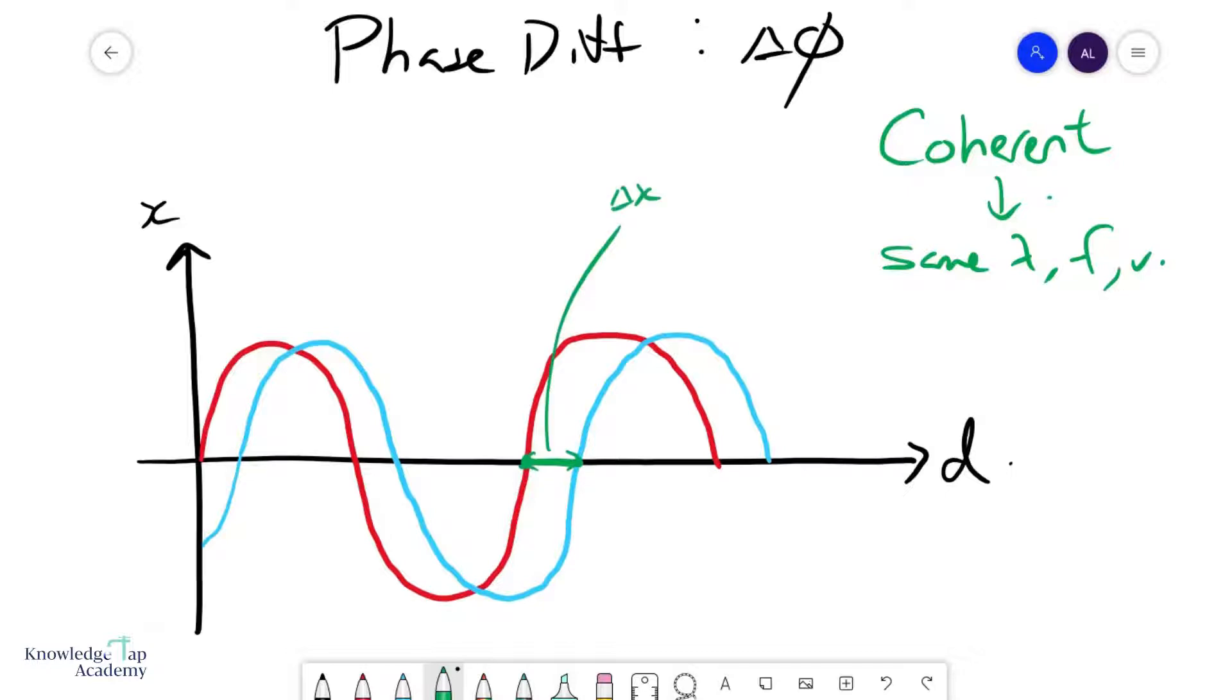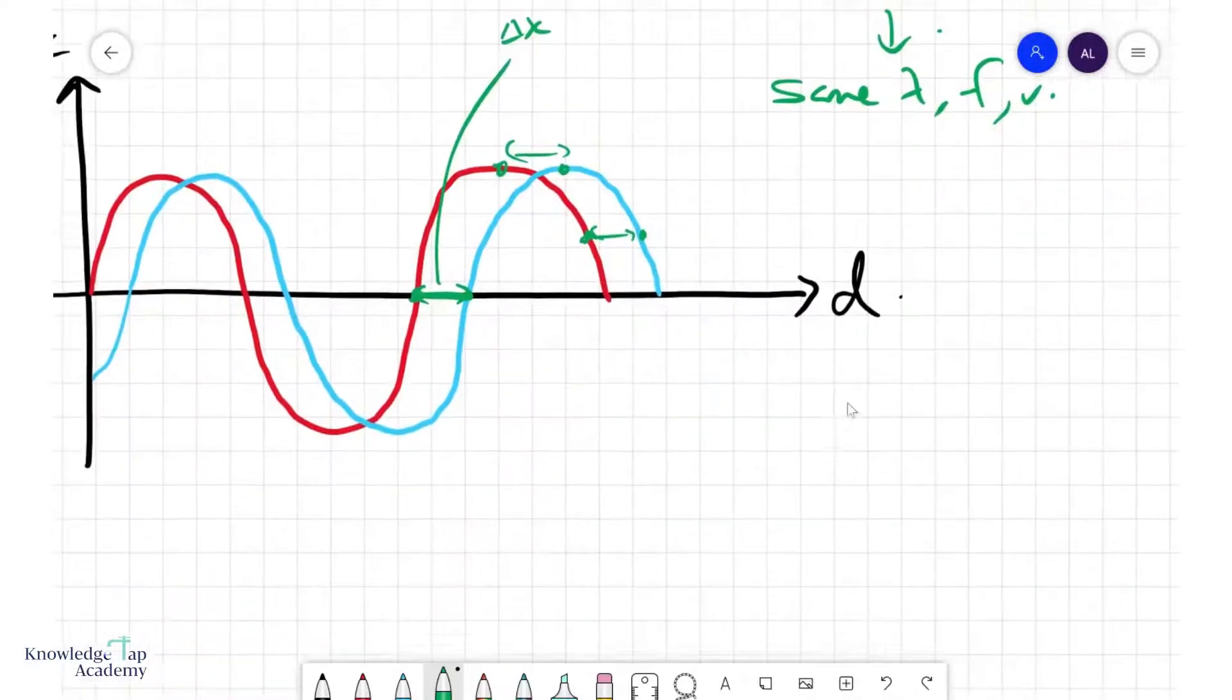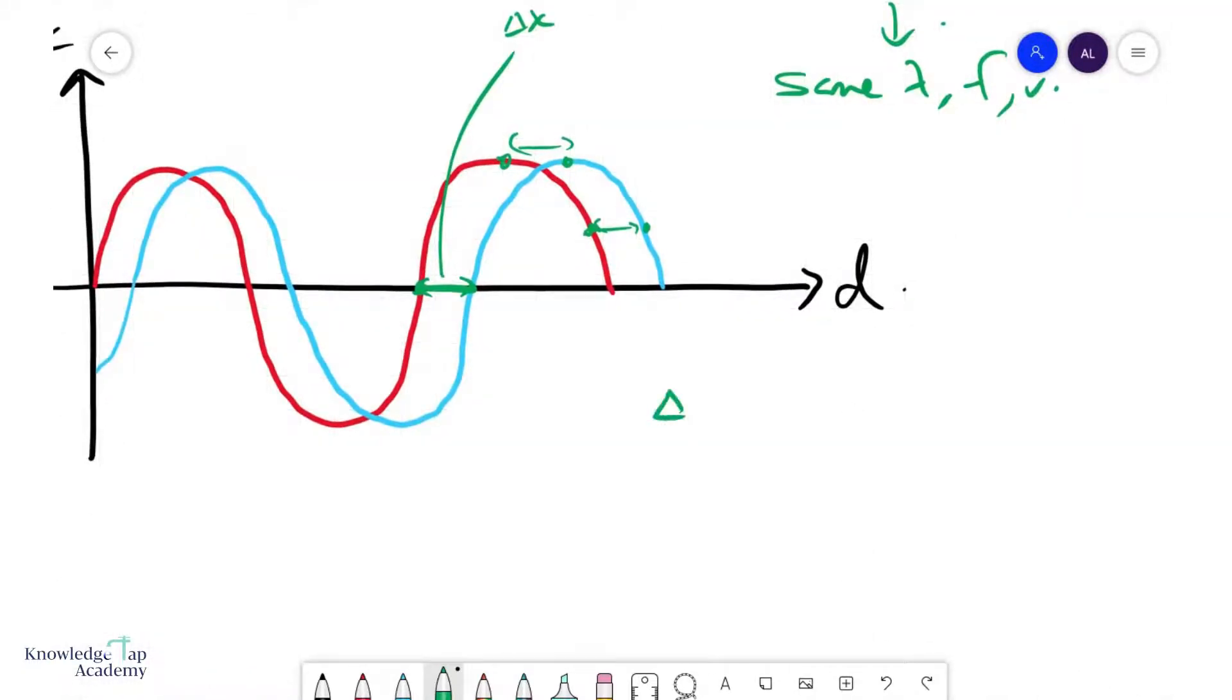could choose any pair of points, like here and here. This should also give you the same Δx, or here and here. And if you take this Δx as a fraction of the